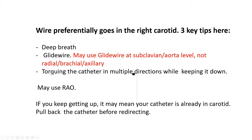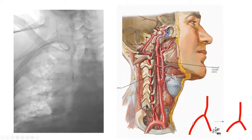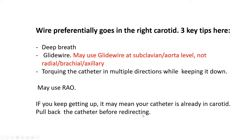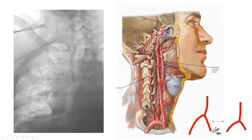Additional tips: torque the catheter in multiple directions while keeping it down. If you keep getting into the carotid, pull back your catheter quite a bit before redirecting and trying again. If you keep encountering difficulty, it is possible that your innominate has an occlusion — but this should be realized before your case because we should always measure blood pressure in both arms before we start.